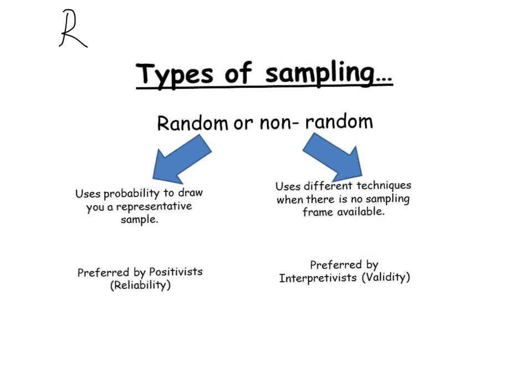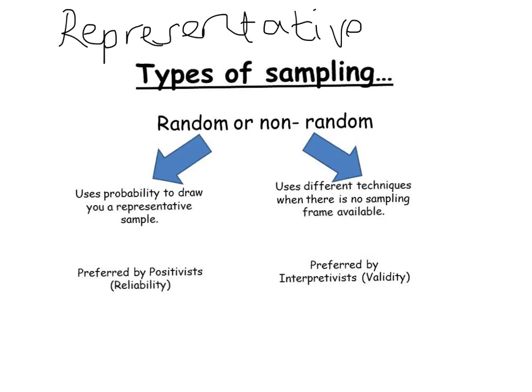So that word again is representative. If a sociologist is wanting representative data, the chances are that they're a positivist. We already know that positivists believe that sociology is a science and that they're looking for reliability. This means that they use random sampling techniques, which uses probability to draw a representative sample.